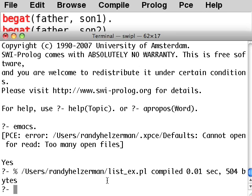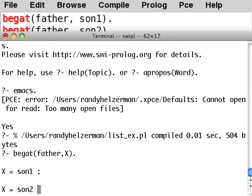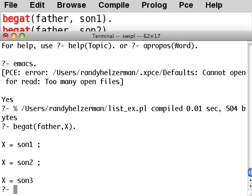And you already know that, so this is like a translation of the question, who did father begat, right, or who is this father's son? This is a translation of that question in Prolog. And you already know that if you hit the semicolon after it displays the first instance here, it will go on to the next one, right? So this father has three different sons.